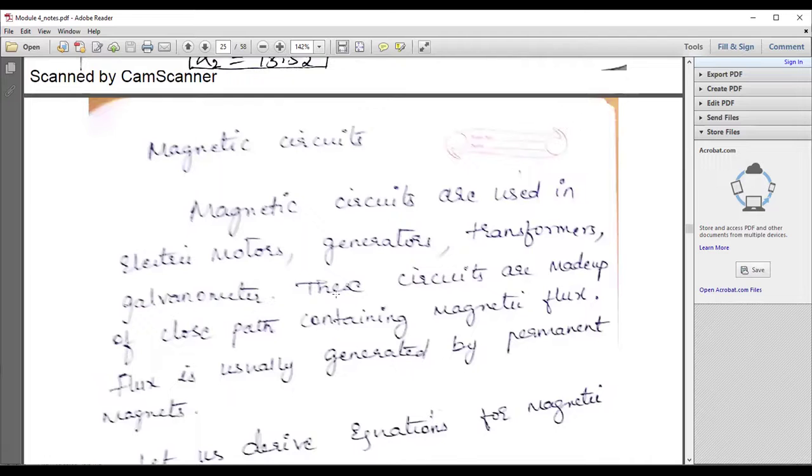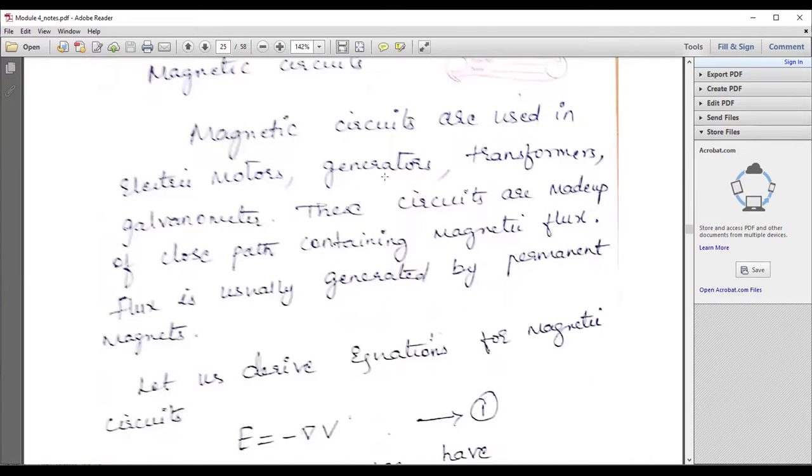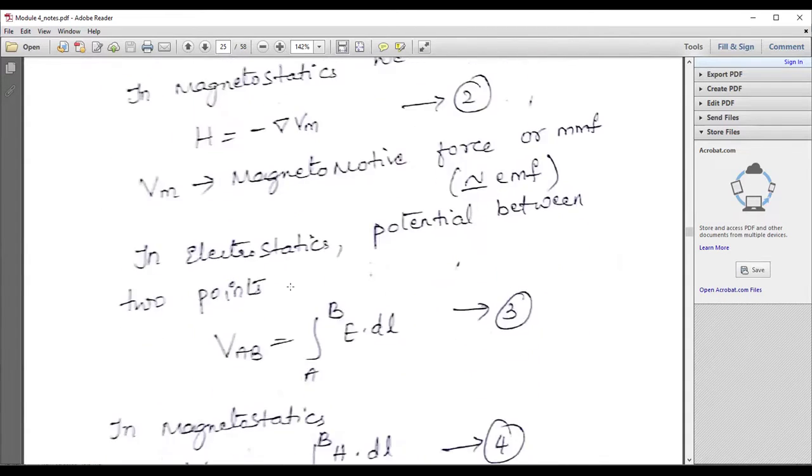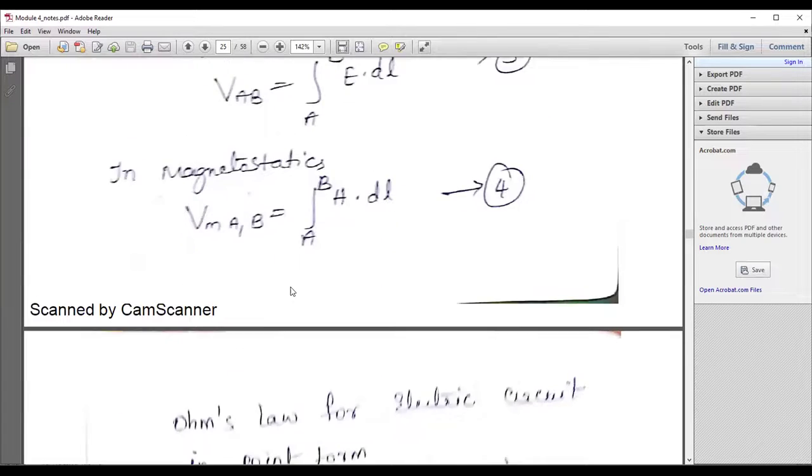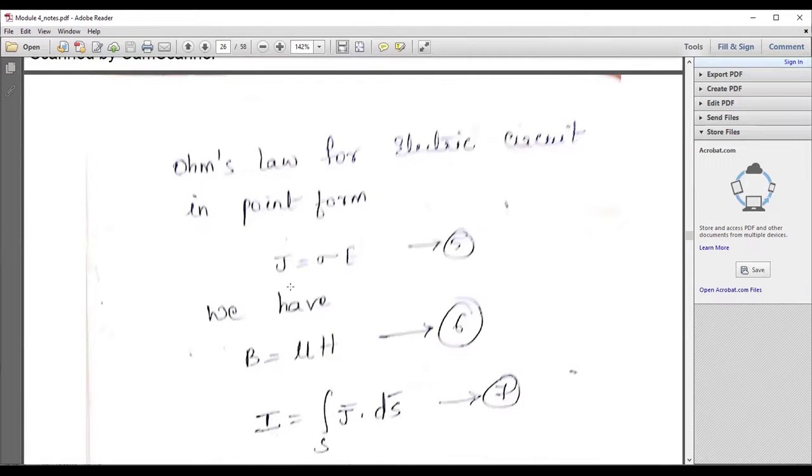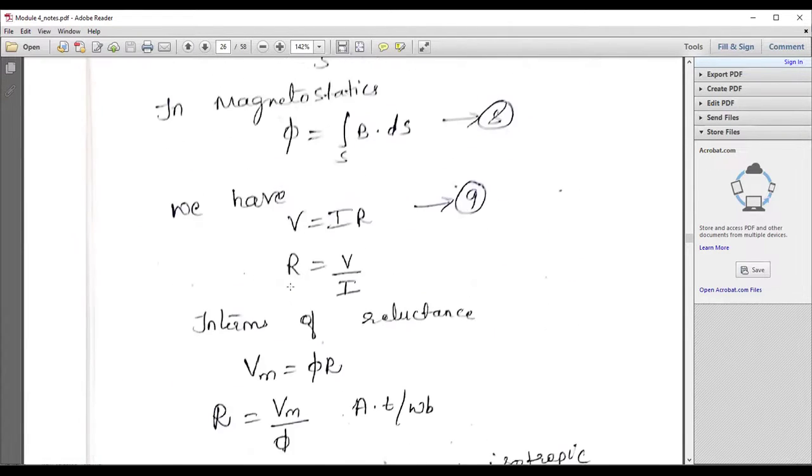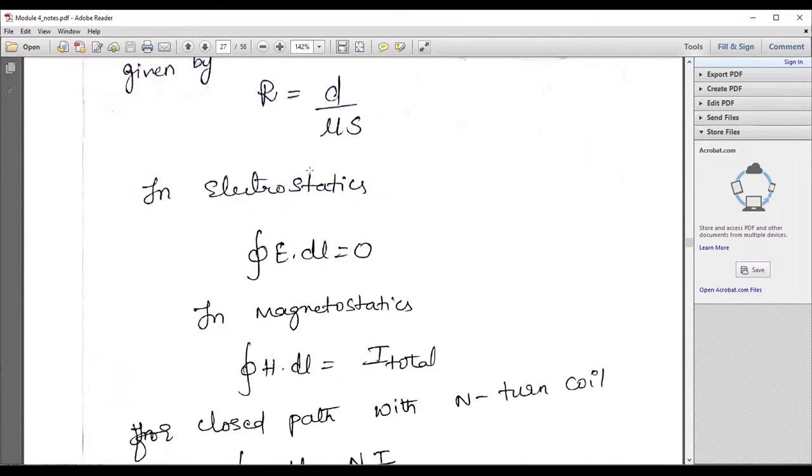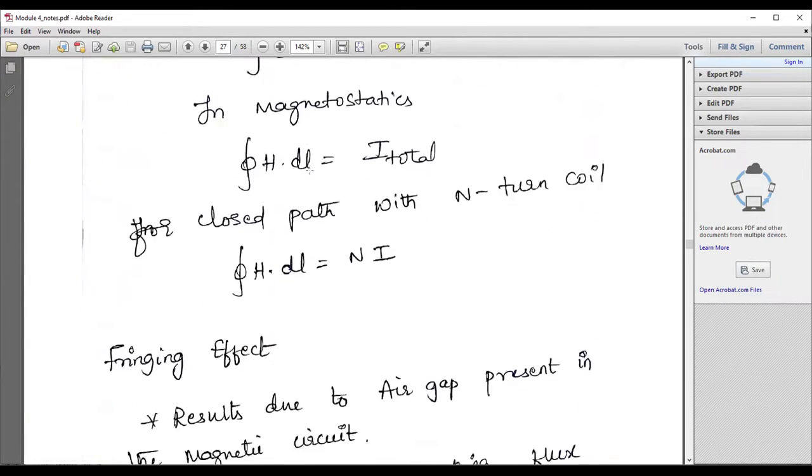Then magnetic circuit. What is the meaning of magnetic circuit? Circuits are used in electric motors, generators, transformers, galvanometer. These circuits are made up of closed path containing magnetic flux. Flux is usually generated by permanent magnets, conventional method. So just remember this.